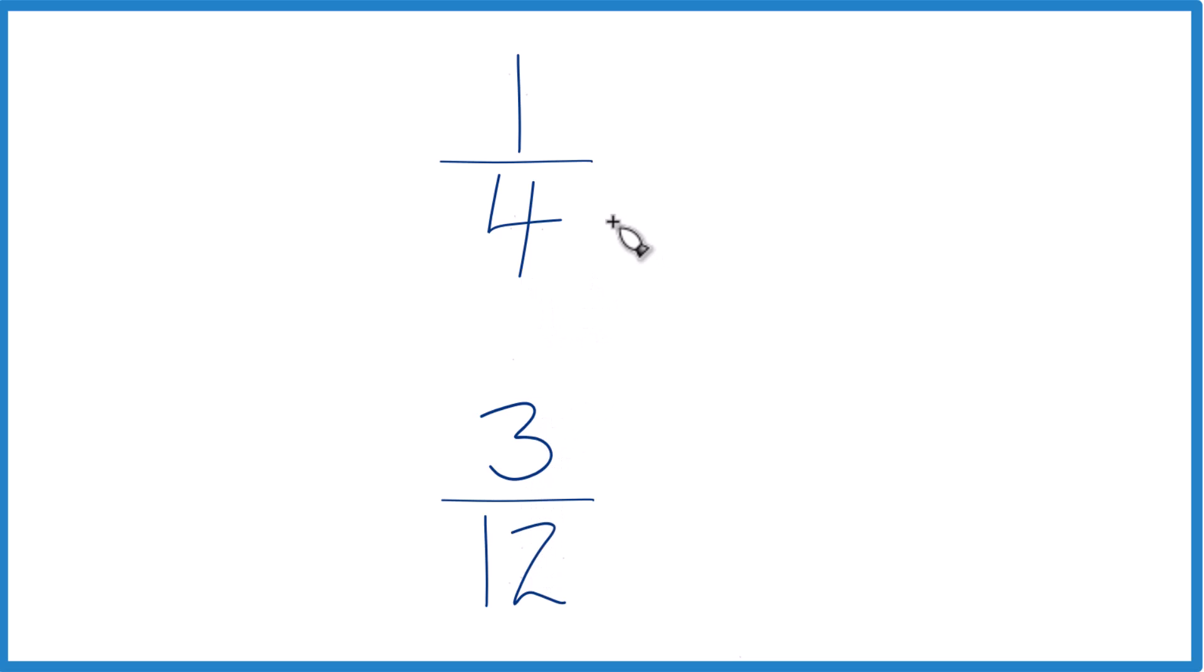Four goes into twelve three times. I'm just going to multiply four times three because that'll give me twelve as my denominator. Down here I already have twelve, so let's just call that three-twelfths, keep it the same.